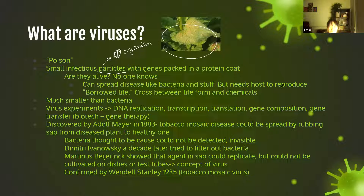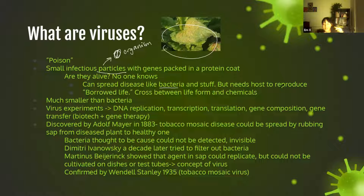A decade later, another scientist — Dmitri Ivanovski — tried to filter it out again but also could not. He actually showed that the agent in the sap could replicate, but it could not be cultivated on dishes or test tubes. Petri dishes can cultivate bacteria — you might see purple or pink spots — but he couldn't do that. So he decided it couldn't have been bacteria; it had to be something even smaller. That's where we get viruses from.